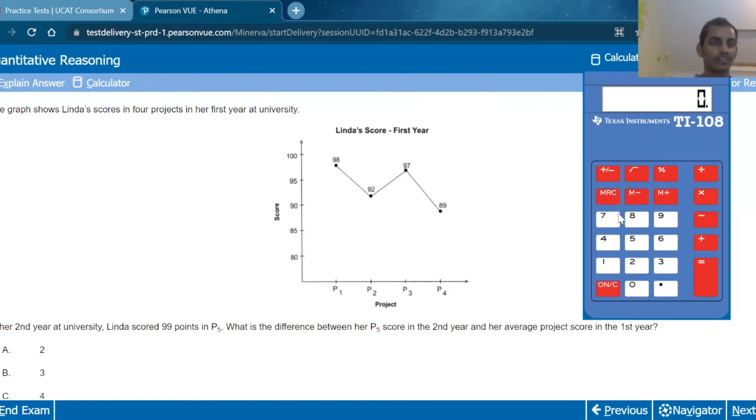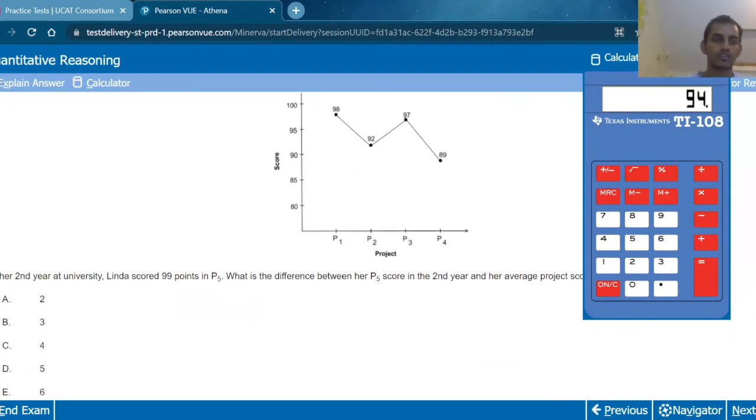So done that for this question and we can see that what they're telling us to do is input the P5 score. Second year she scored 99 points in P5, what is the difference in P5 second year on the average of what she scored in first year? So as you can see there are quite a few calculations we need to do here and I'm going to use a number pad to do them as quickly as I can. So first one I'm going to do is find the average score so let's do that: 98 plus 92 plus 87 and 89 and that all equals 376, let's divide that by 4. That's 94, so the average is 94. So let's do 94 and 99, take those away and you know in my head I get 5.